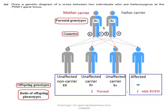Question A: Draw a genetic diagram of a cross between two individuals who are heterozygous at the PINK1 gene locus. Symbols used: E capital for healthy allele, E small for mutant or EOPD allele. Heterozygous individuals are carriers, so their genotypes are Ee. The parents' gametes are E and e. The offspring genotypes are EE, Ee, Ee, and ee. The phenotype ratio is 3 normal to 1 diseased.